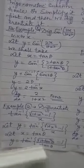Second example: differentiate tan⁻¹((√(1+x²) - 1)/x). Let y = tan⁻¹((√(1+x²) - 1)/x). Let x = tan θ, so y = tan⁻¹((√(1 + tan²θ) - 1)/tan θ).